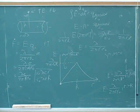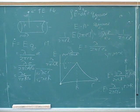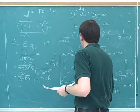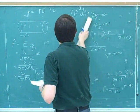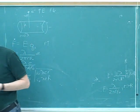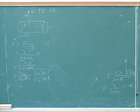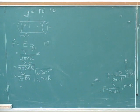So then for part E: if the electron is released from rest at r equals 2R, how fast is it moving when it reaches the cylinder? Okay, so we're looking for the velocity. I think there are a few things we can do — we can find the potential, and then find the potential energy. That's good.